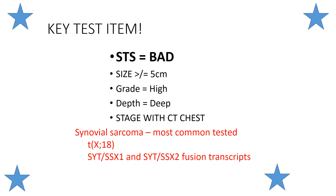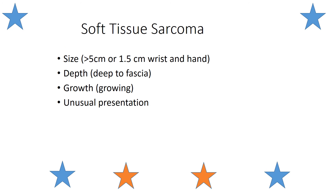Key factors for soft tissue sarcoma prognosis: size greater than five centimeters, high grade, and deep fascial location closer to the heart — all portend worse prognosis. Stage with CT scan of the chest because soft tissue sarcomas have a hematogenous route of spread, not lymphatic as carcinomas do. Synovial sarcoma is the most commonly tested soft tissue sarcoma — it has an X;18 translocation, and SYT-SSX1 and SSX2 fusion transcripts. Things bigger than a golf ball, bigger than five centimeters, or one and a half centimeters at the wrist, hand, or foot — deep, growing, with unusual presentation — need to be strongly considered for soft tissue sarcoma.